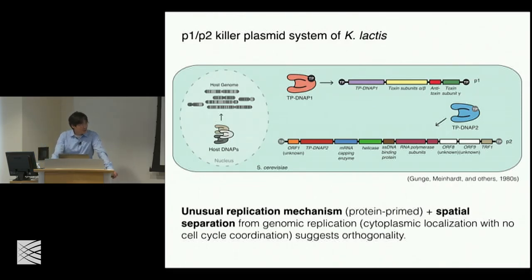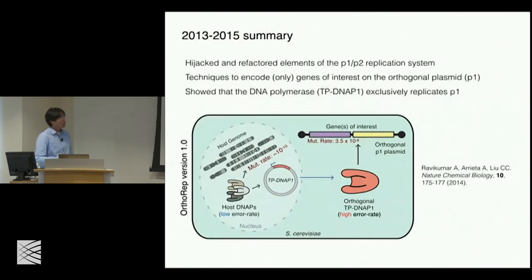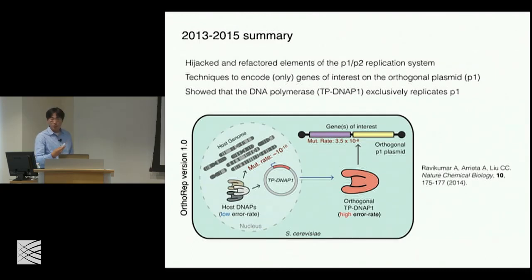The other striking thing was that this replication system, as far as people could figure out with fractionation, was exclusively in the cytoplasm. We confirmed this result by adding an unnatural nucleoside that has an alkyne on it — DNA polymerases are known to get tricked and incorporate this into replicating strands. When we added this, we could label newly synthesized DNA using a dye that we can click onto this alkyne, and we found that it was all in the cytoplasm. In fact, if you alpha-factor arrest cells — a trick in yeast where you can inhibit nuclear replication — you see these dots light up in the cytoplasm but nothing in the nucleus. This fact that we had an unusual replication system and spatial separation suggested that this natural system might already be orthogonal.